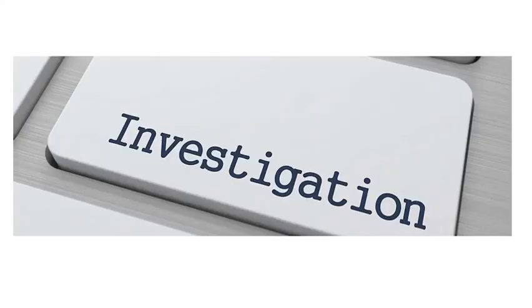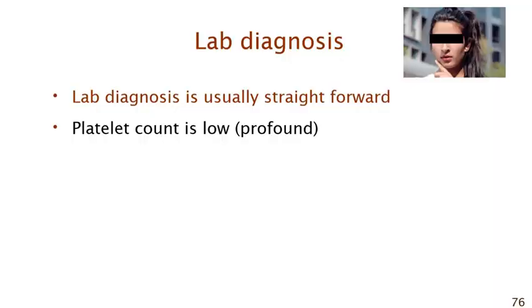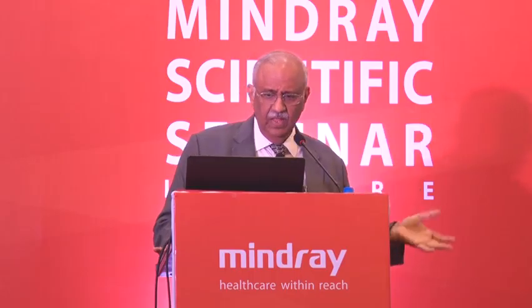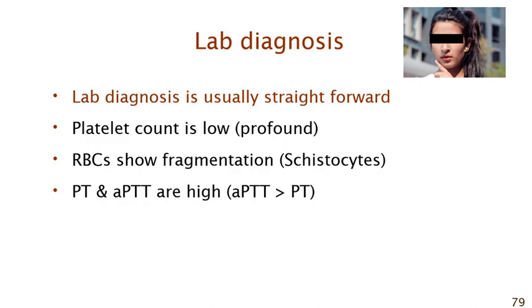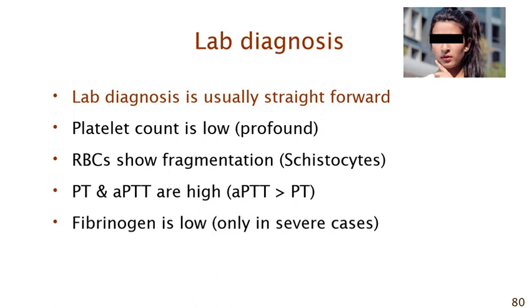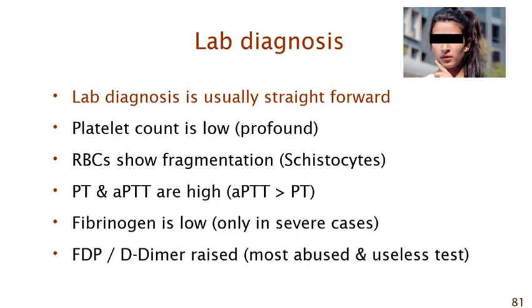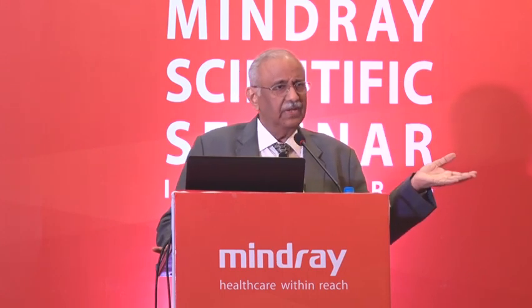How do you investigate a patient with DIC? It's straightforward. Platelets are profoundly low — not modestly low like in liver disease. Hand in hand goes RBC fragmentation. PT and PTT are invariably high, with PTT more elevated than PT. Fibrinogen is low but only in severe cases. FDP and D-dimers are raised but are among the most useless tests for DIC in clinical practice. So you see low platelets, RBC fragmentation, elevated PT and PTT, and possibly low fibrinogen.